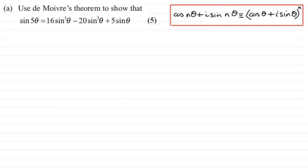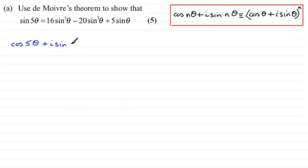What I'm going to do is take this expression where n equals 5, so we can generate sine 5 theta. So we write cos(5θ) + i·sin(5θ), and by De Moivre's theorem this is identical to (cos θ + i·sin θ) all to the power 5.